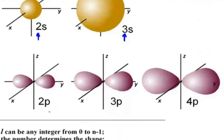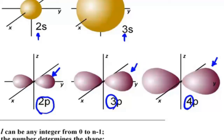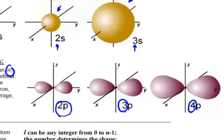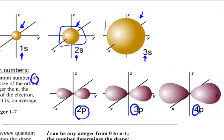Looking at the p orbitals — 2p, 3p, 4p — when n equals 2 we have a certain sized orbital, n equals 3 gives a bigger orbital, and n equals 4 an even larger orbital. There is a direct relationship between how far away the electron is from the nucleus and the principal quantum number. The energy of the electron increases as n increases, and because the electron has more energy, on average it's going to be further from the nucleus, occupying a larger space shown by the orbital surfaces getting larger.